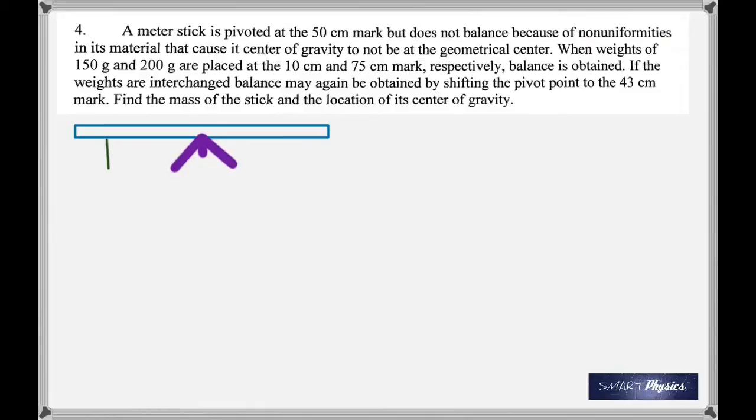If the weights are interchanged, balance may again be obtained by shifting the pivot point to the 43 centimeter mark. You've got to find the mass of the stick and the location of its center of gravity.